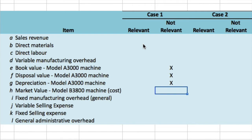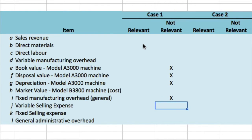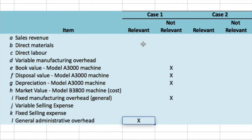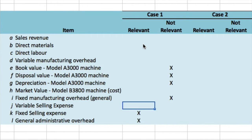Anything else we can ignore? The problem states that the increase in volume will increase fixed selling expenses and general administrative overhead, but not general fixed manufacturing overhead. So general fixed manufacturing overhead will have no effect — those costs will be the same whether we get the new machine or not. But fixed selling expenses and general administrative overhead are going to change, so general administrative overhead and fixed selling expense are clearly relevant.